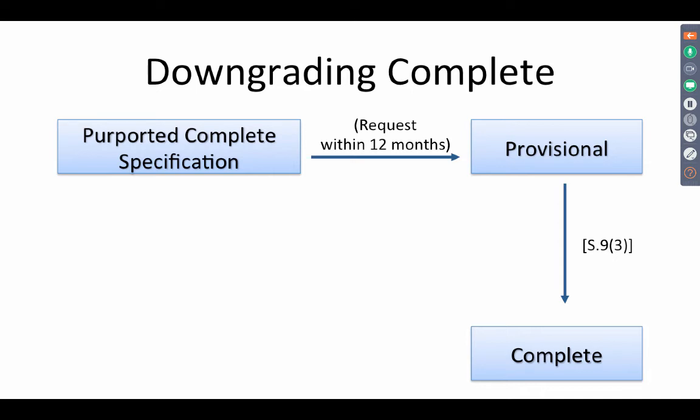Within 12 months, you can make a request to downgrade your complete specification into a provisional. There is no new provisional that is filed; the same document will now have a different nomenclature — it will be called a provisional. That provisional then has to be followed up by a complete, because as we know provisionals do not have a life of their own; it has to be followed by a complete. This is what Section 9.3 tells us.